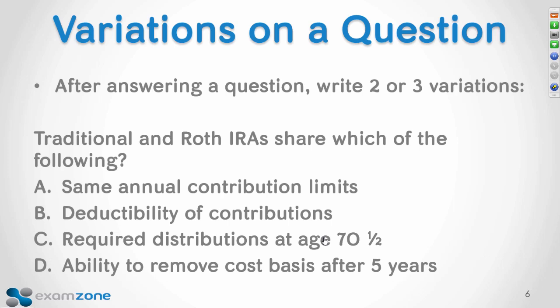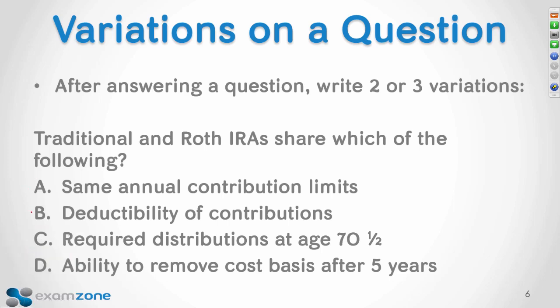For example, there are many ways the test could ask about traditional and Roth IRAs. If you see the question 'Traditional and Roth IRAs share which of the following?', you know they don't share three of these: only the traditional offers deductible contributions, only the traditional has the required distribution at age 70½, and only the Roth lets you remove your cost basis after five years. They do actually share the same annual contribution limit — $5,500 for both, or that total among the two.